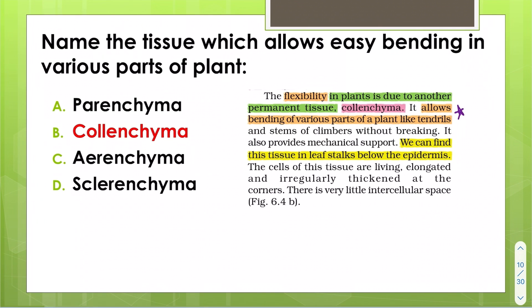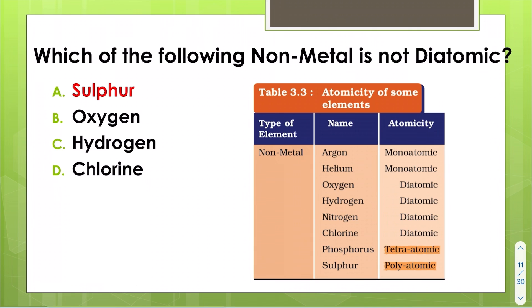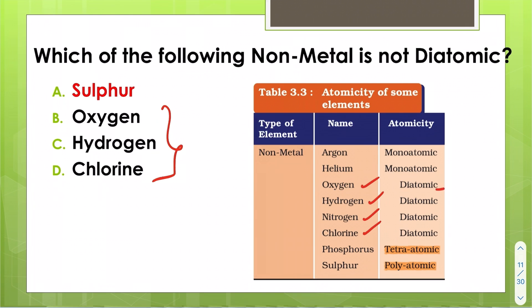The tissue which allows easy bending in various parts of a plant — that flexibility — comes from the permanent tissue collenchyma. The non-metal that is not diatomic: oxygen, hydrogen, nitrogen, and chlorine are all diatomic, bonded by two atoms. Sulfur in this case is polyatomic, so that is the wrong one.